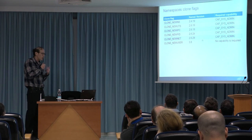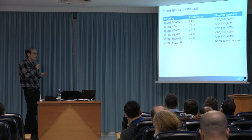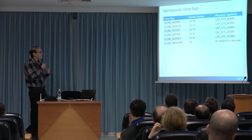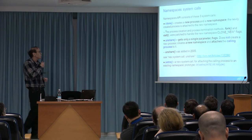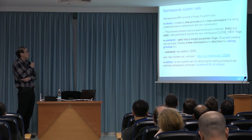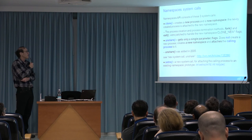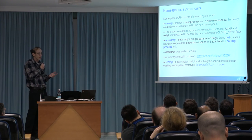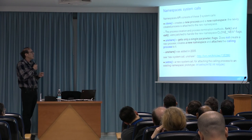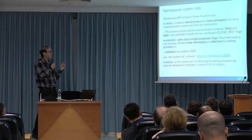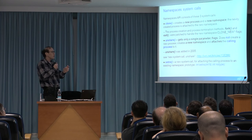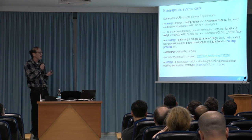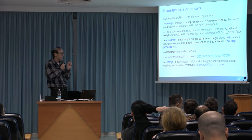In order to implement namespaces, two system calls were added: unshare and setns. Clone creates a new process, creates a new namespace, and attaches the process to the new namespace. Unshare, as opposed to clone, doesn't create a new process — it only attaches the calling process to a newly created namespace. setns, as opposed to both, doesn't create a namespace or a process — it simply attaches the calling process to an existing namespace according to two parameters.